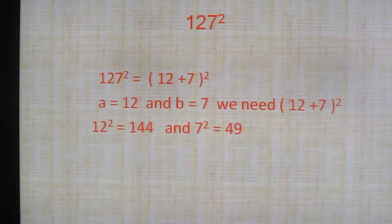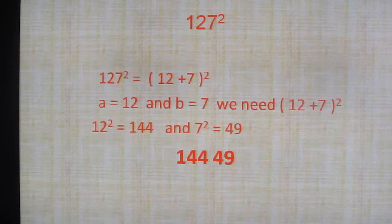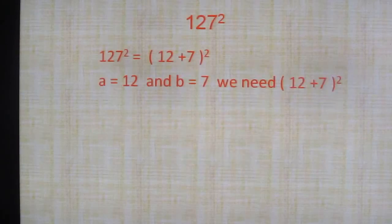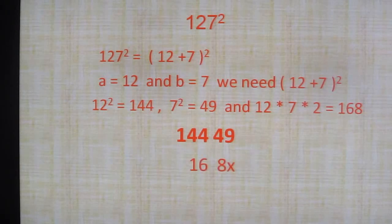So what is 12 square? 144. What is 7 square? 49. So just write 144 and 49 next to each other. Now what we need? 2 times 12 times 7. Or 12 times 7 times 2. What is 12 times 7 times 2? That is 84. 84 times 2, 168. Just write it down. And then when you add it up, so what will be getting the answer? 1, 6, 1, 2, 9.